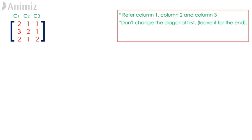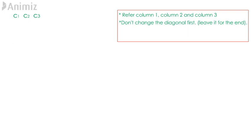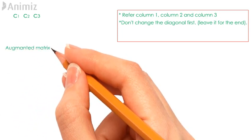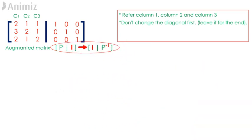We carry out the following procedure when given P equals 2 1 1, 1 1 1, 2 2 1 and we are asked to find the inverse of P by using ERO. Before anything, we need to write the matrix P in augmented matrix form: 2 1 1, 3 2 1, 2 1 2 on the left and the identity matrix 1 0 0, 0 1 0, 0 0 1 on the right. Our aim is to perform ERO until eventually getting the identity matrix on the left-hand side and the inverse matrix on the right-hand side, so the augmented system [P|I] becomes [I|P inverse].